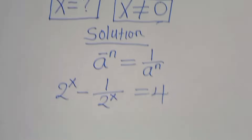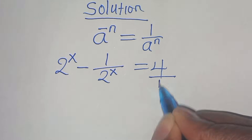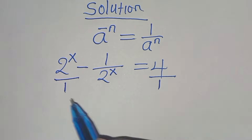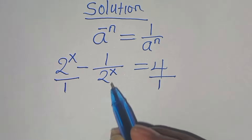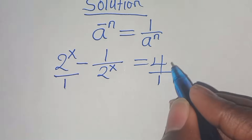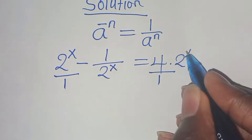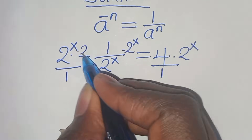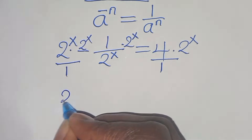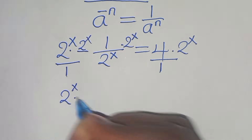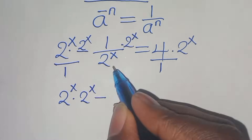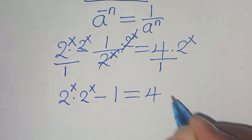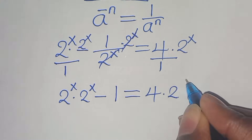The 4 is over 1 and 2 to the power of x is over 1. The LCM here is 2 to the power of x. Let's multiply everything by 2 to the power of x: we get 2 to the power of x times 2 to the power of x, subtract 1, equals 4 times 2 to the power of x.